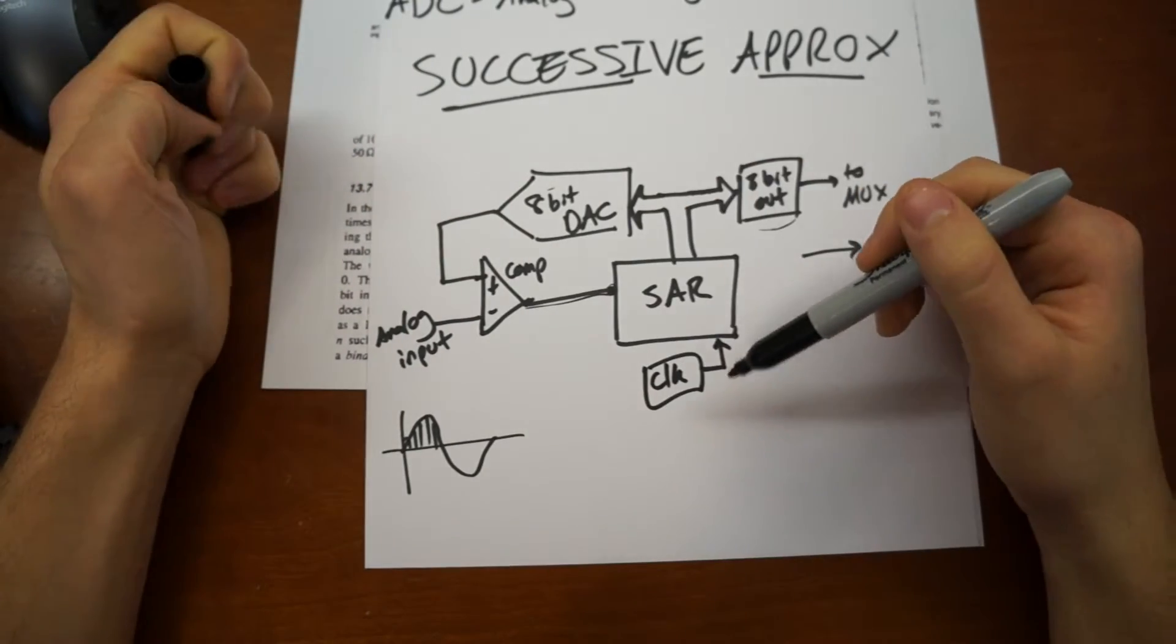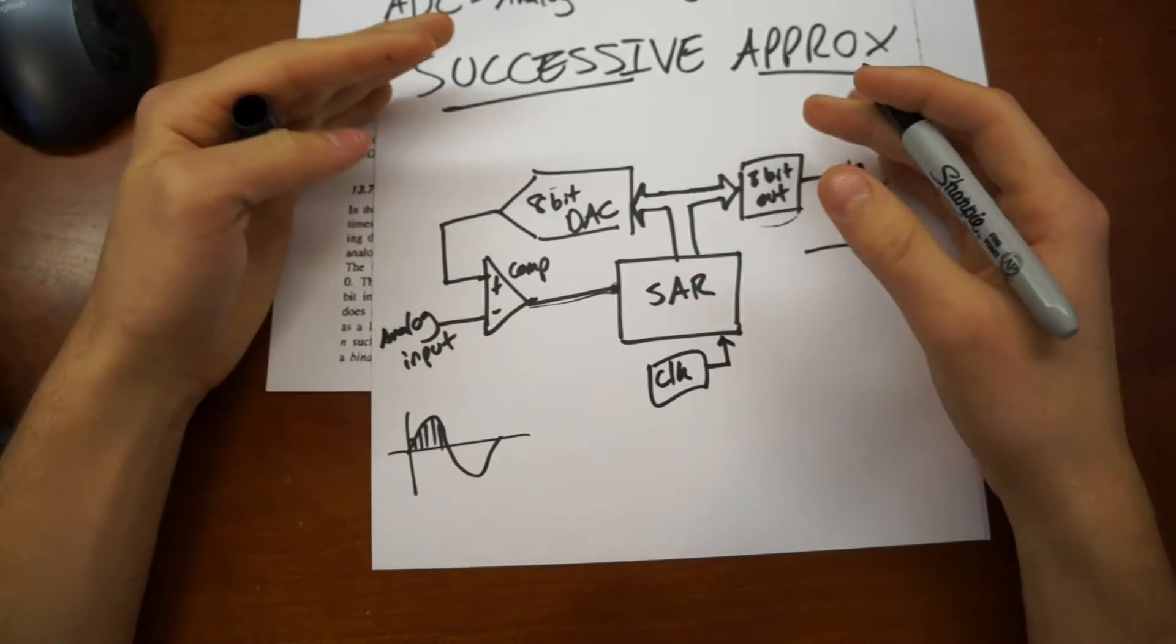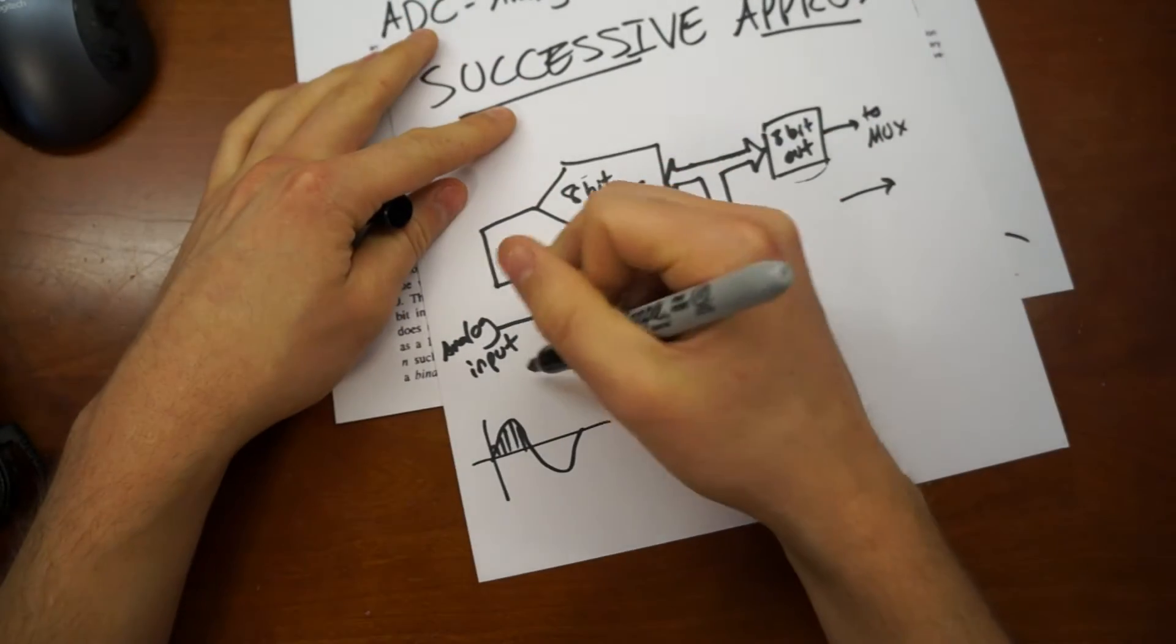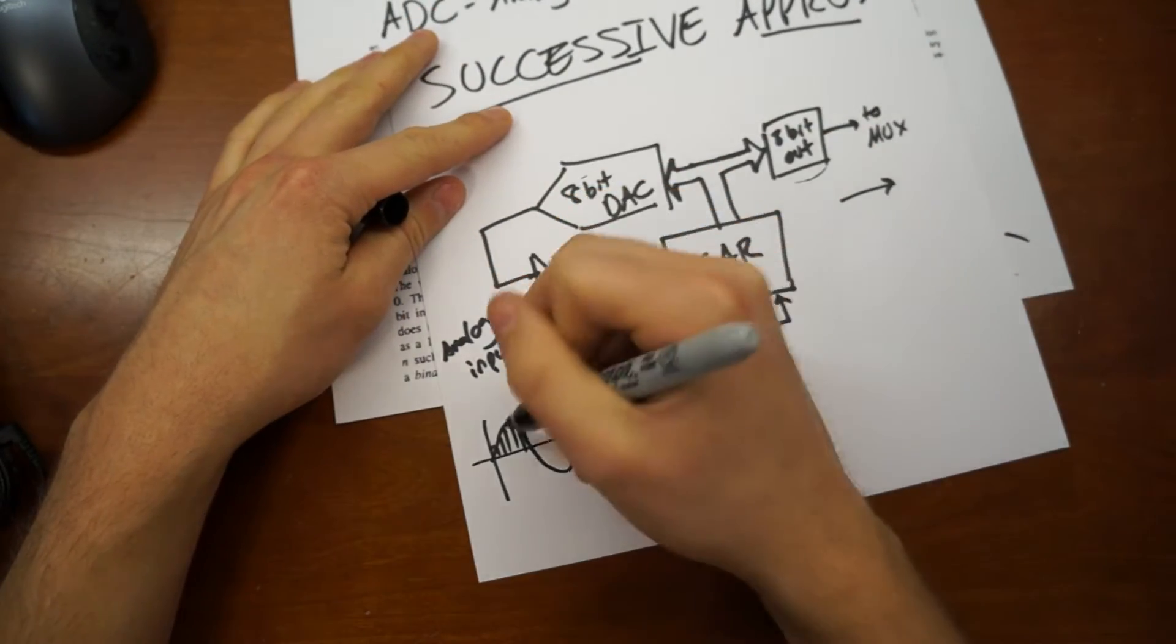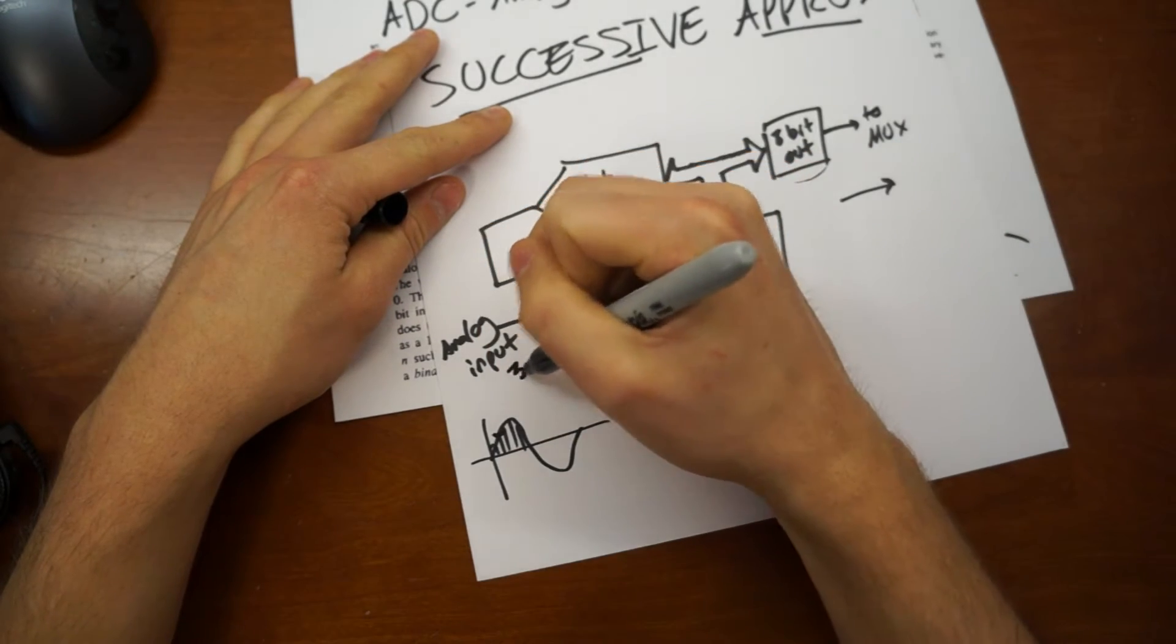So assume that there's some clock and that there's a limited speed that this successive approximation network can take a reading. Now, let's just focus on the reading portion of what's happening. So say I sample somewhere along a waveform here, and it's 3.6 volts.